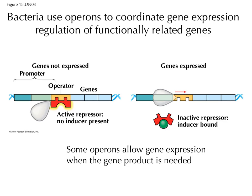Then we have inducible operons. It's still repression, but the opposite: gene expression is usually being repressed because of the bound repressor. But when a certain product is present, it binds the repressor and unbinds it from the operator. So most of the time the genes are off until a certain product is available, then the genes get turned on. That's inducible.